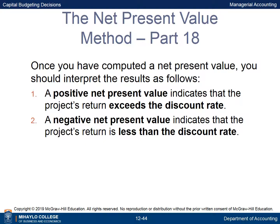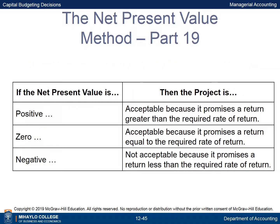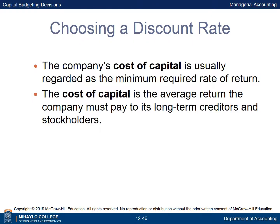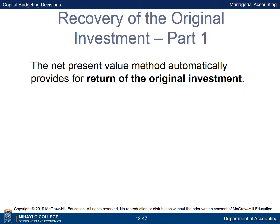Once you have computed a net present value, interpret the results as follows: a positive NPV indicates the project's return exceeds the discount rate; a negative NPV indicates it is less than the discount rate. If the NPV is positive, the project is acceptable; if zero, it promises a return equal to the required rate; if negative, it is not acceptable. The company's cost of capital is usually regarded as the minimum required rate of return — it is the average return the company must pay to its long-term creditors and stockholders. The net present value method automatically provides for the return of the original investment.